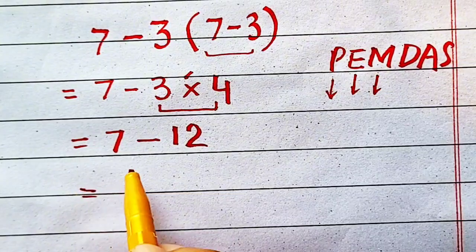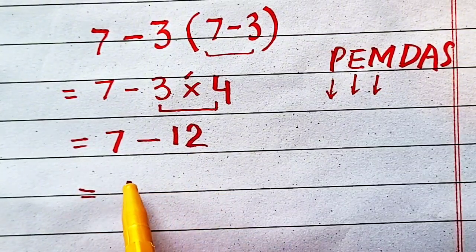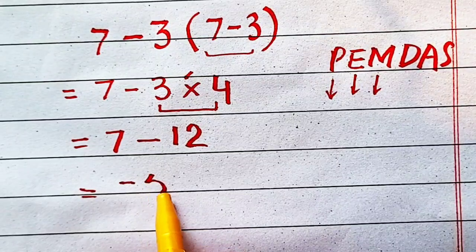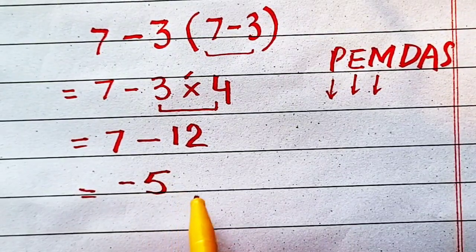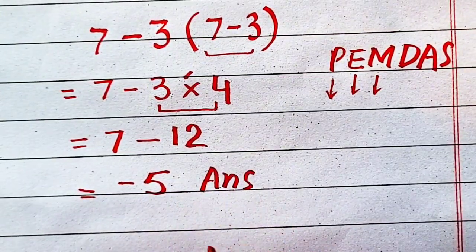And after solving it, 7 minus 12 will be equal to minus 5. Which is your answer. Thank you.